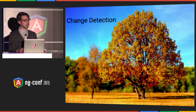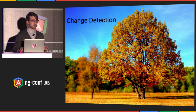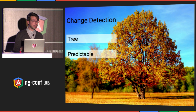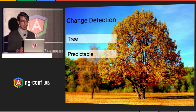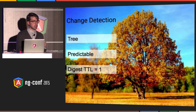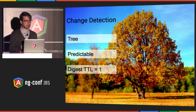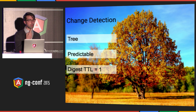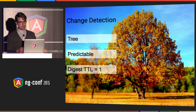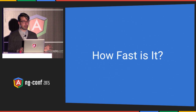So what we've learned so far: in the new system the change detection graph is a tree, which makes the system a lot more predictable. The number of digest iterations is one. And what I like most is that you can reason about it statically and locally — you can look at a single template, one file, and know how changes propagate without knowing anything else about your application. But the main question for many is: how fast is it?